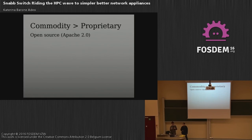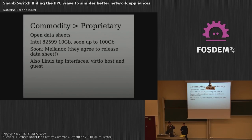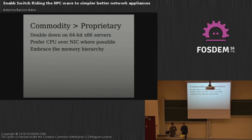Commodity is better than proprietary. The base level is to use a free, open-source license — everything new in Snap is licensed under Apache 2.0. It also means that with the network devices we work with, while sometimes we develop drivers under NDA, we always insist those drivers have open datasheets. The Intel 82599 drivers have been a staple. Recently, we got an agreement with Mellanox to release their datasheets as open datasheets because we demanded it — we said we're not going to make drivers for you if you don't publish datasheets properly. We also have interfaces for Linux tap, and the virtio host and guest side, with the guest side built in LuaJIT.